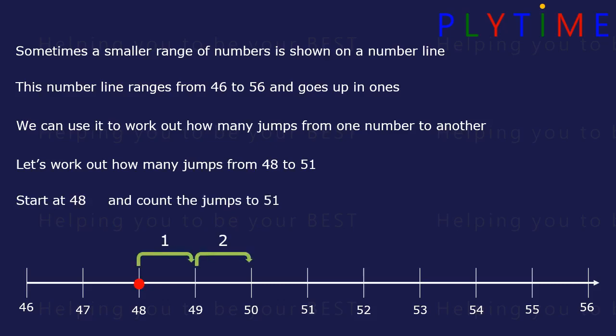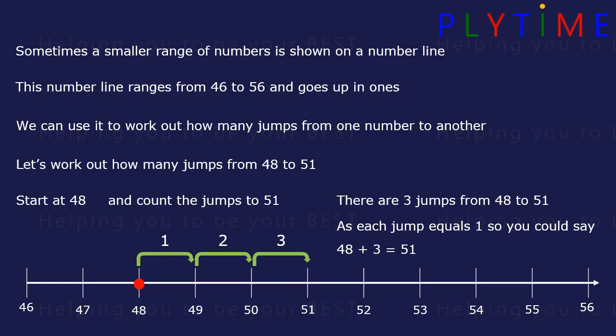1, 2, 3. It's 3 jumps from 48 to 51. As each jump equals 1, we could say 48 plus 3 equals 51.